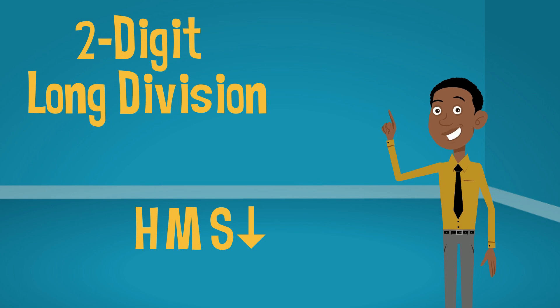The good news is that when dividing by two-digit numbers, we can still follow the same steps – how many, multiply, subtract, and bring down. The mental calculations just get a little trickier.